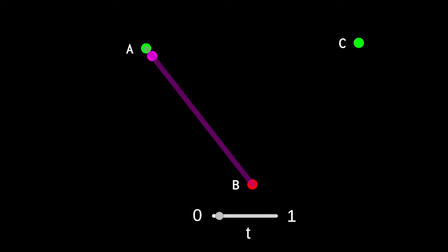When t is 0, LERP outputs the start point. When t is 1, LERP outputs the end point. And we're going to vary t smoothly from 0 to 1.